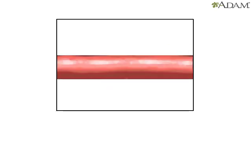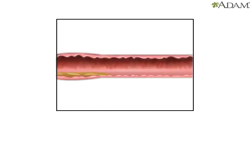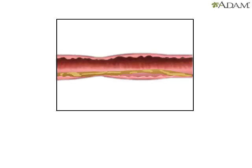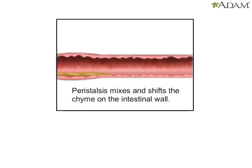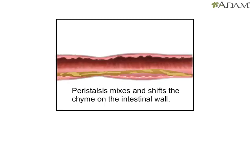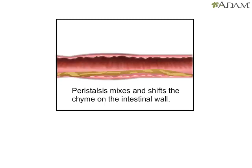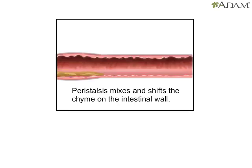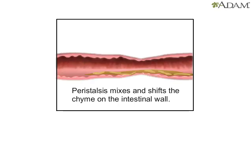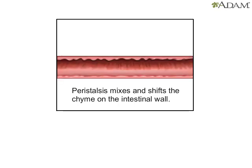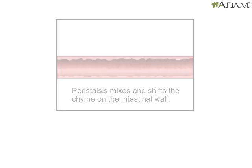Stretching out a piece of intestine will make it easier to see the wave-like motion. The motion mixes and shifts the chyme back and forth, letting the bloodstream absorb nutrients through the walls of the small intestine.